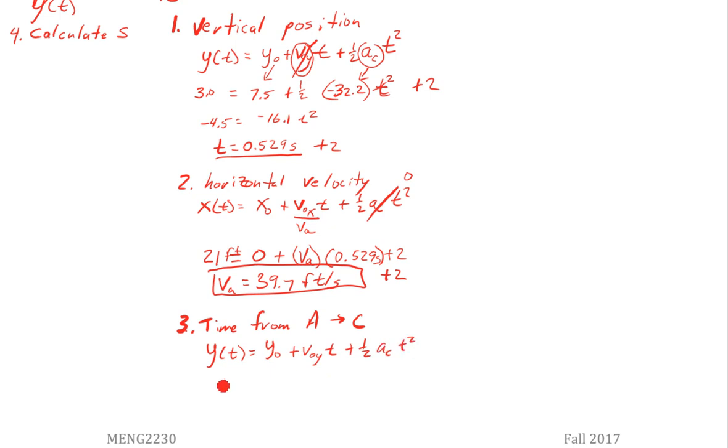So in this case, our final position is 0. Our initial position is 7.5. Our initial velocity is 0. And we have negative 16.1 t squared. So we have negative 7.5 over negative 16.1. Take the square root. So we're going to put t equals 0.683, actually 0.6825 seconds. I'm going to use that in my equation.